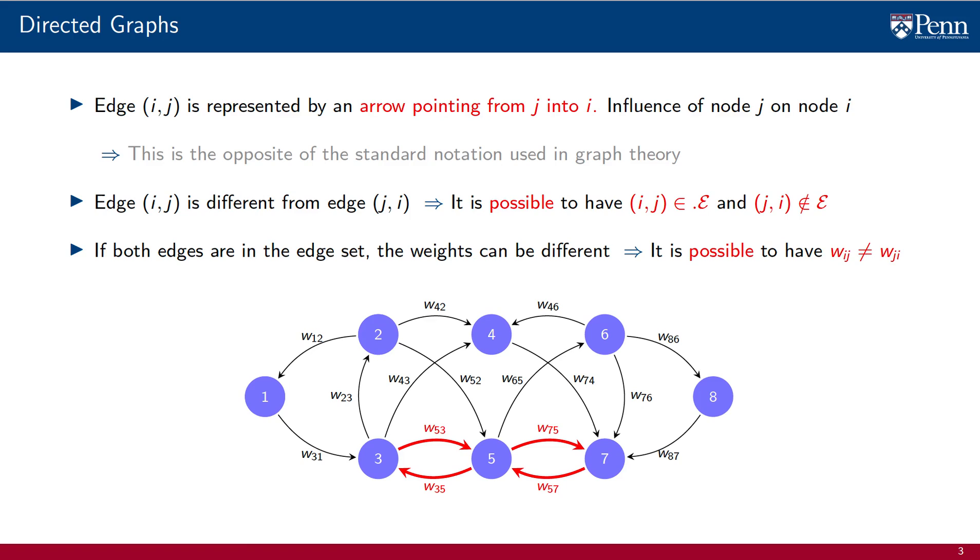That is, if (i, j) and (j, i) are both in the edge set, we can have w(i, j) and w(j, i) be different. In this example graph, we have arrows connecting 3 to 5 in both directions, and we also have arrows connecting 5 to 7 in both directions. If the graph is directed, however, the weight that connects 3 to 5 can be different from the weight that connects 5 to 3. The same holds true for the weights that connect 5 and 7. They can be different.